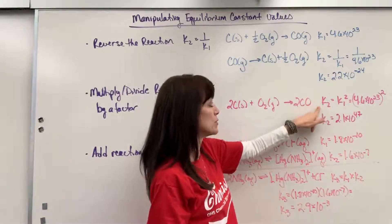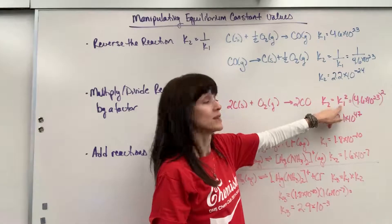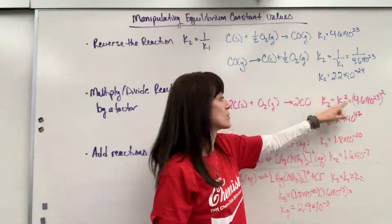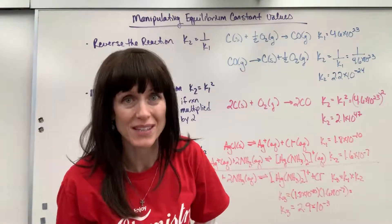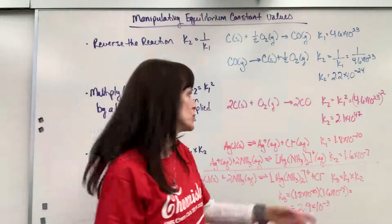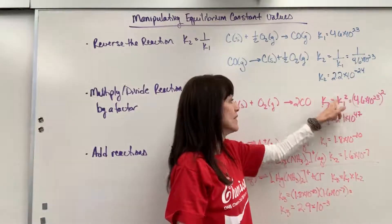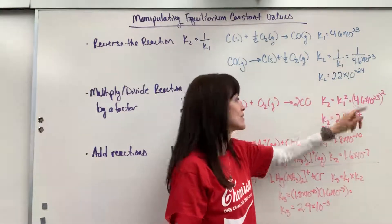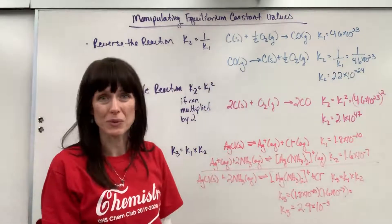So notice how I write this. The k value for the new reaction is going to be the original. Whatever the factor is becomes the exponent. I multiplied it by a factor of 2, so I square the original k value, and that's going to give me my new equilibrium expression.